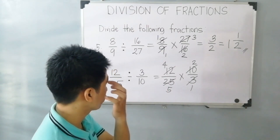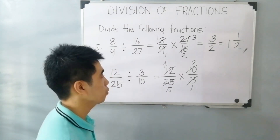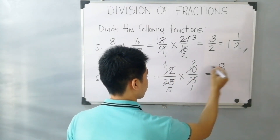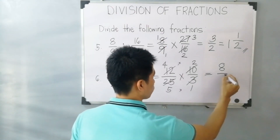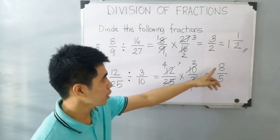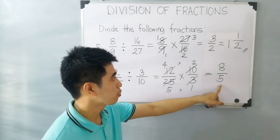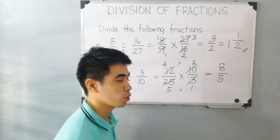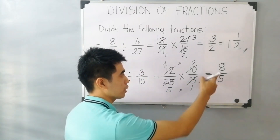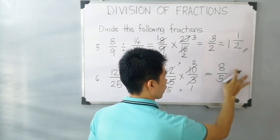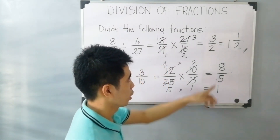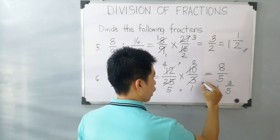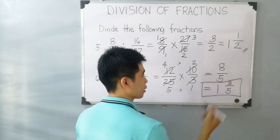We don't have any other numbers that can simplify. Therefore, multiply the numerators: 4 times 2 is 8, and the denominators: 5 times 1 is 5. Since 8 is higher than 5, this is an improper fraction — rewrite it as a mixed number. 8 divided by 5 gives 1, and 8 minus 5 is 3. Then copy the denominator. Our final answer is 1 and 3 over 5.